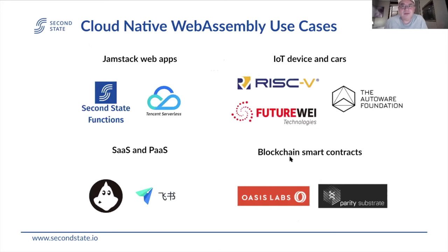Cloud native WebAssembly use cases — these are the partners we work with at Second State. The first category is Jamstack web applications. WebAssembly helps here by providing a universal runtime we can deploy not only on the cloud but also on the edge — CDN networks as compute nodes — which allows serverless-based Jamstack applications to reach high performance.